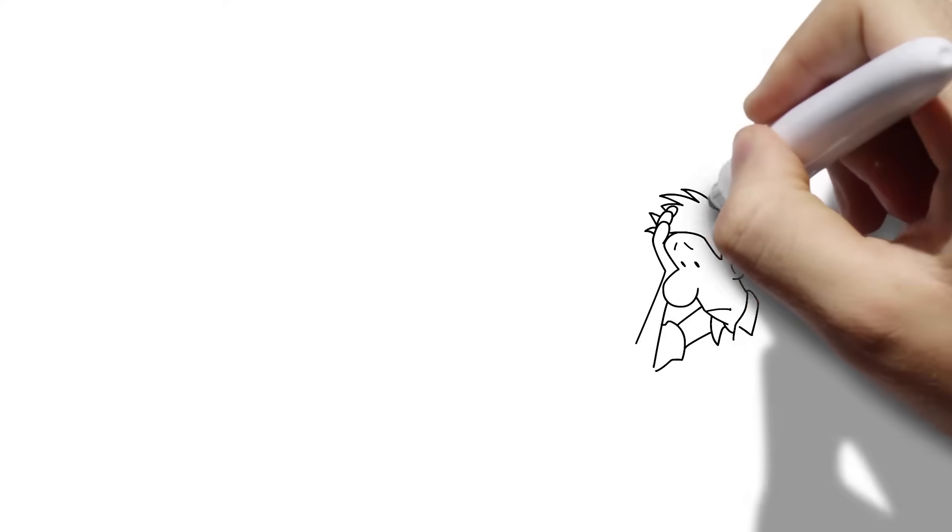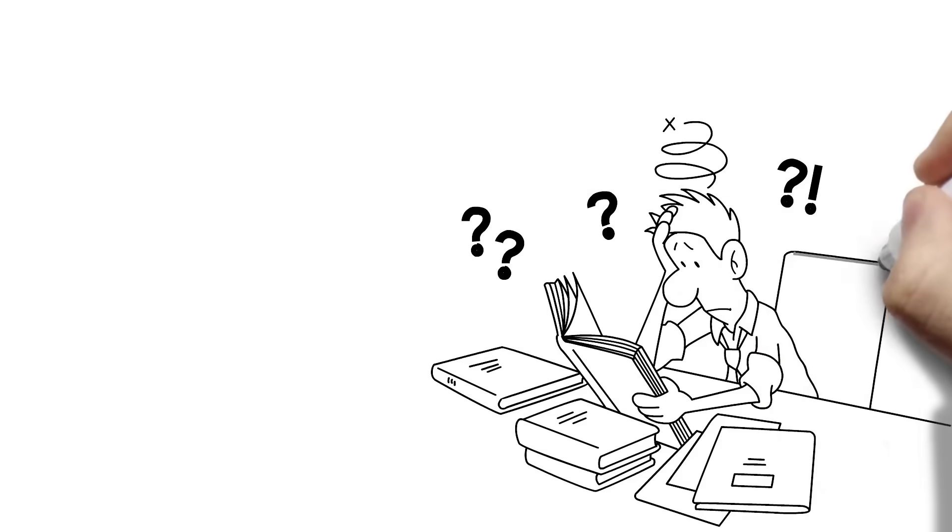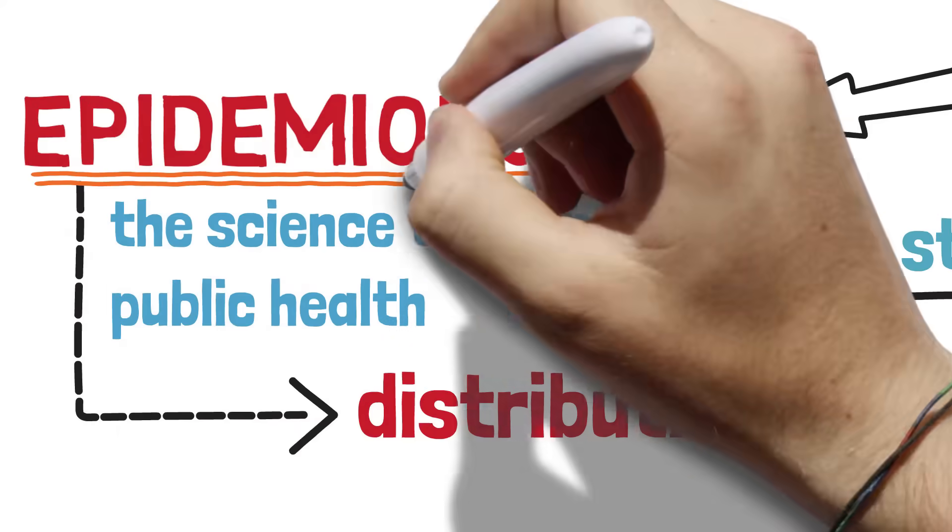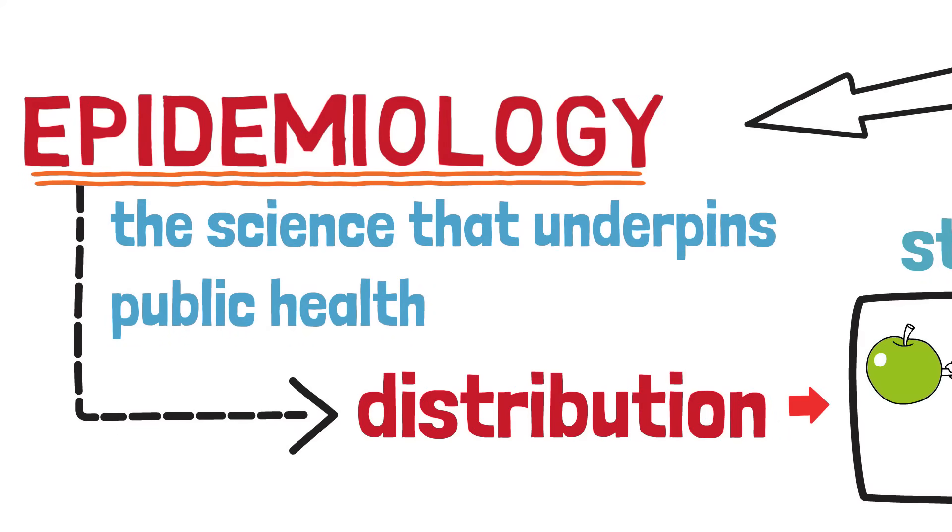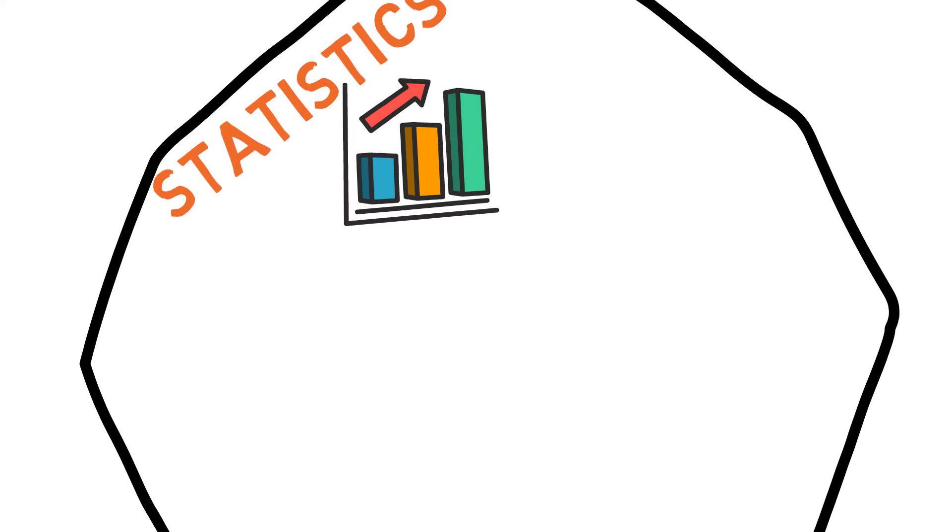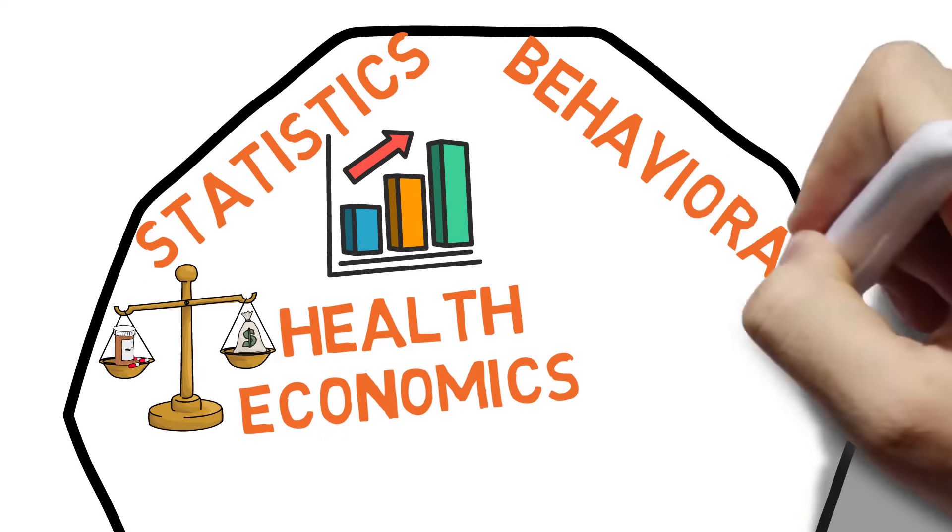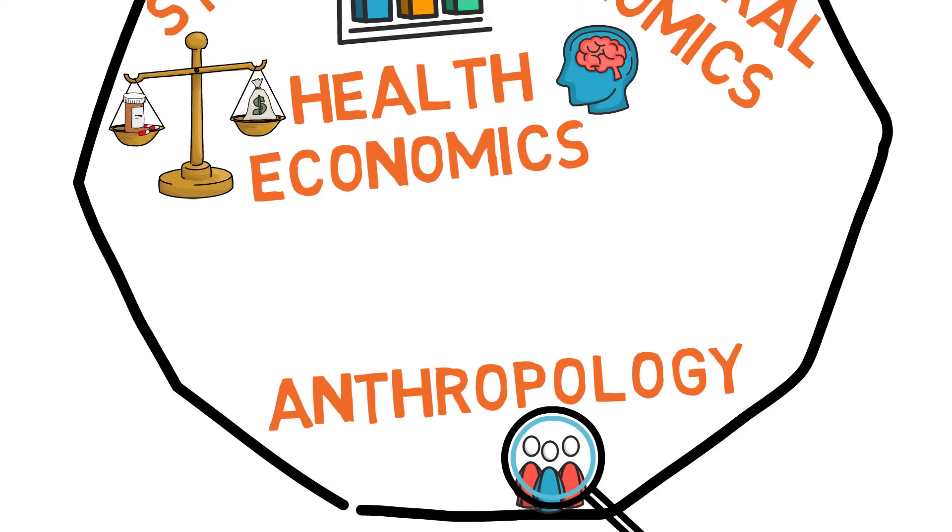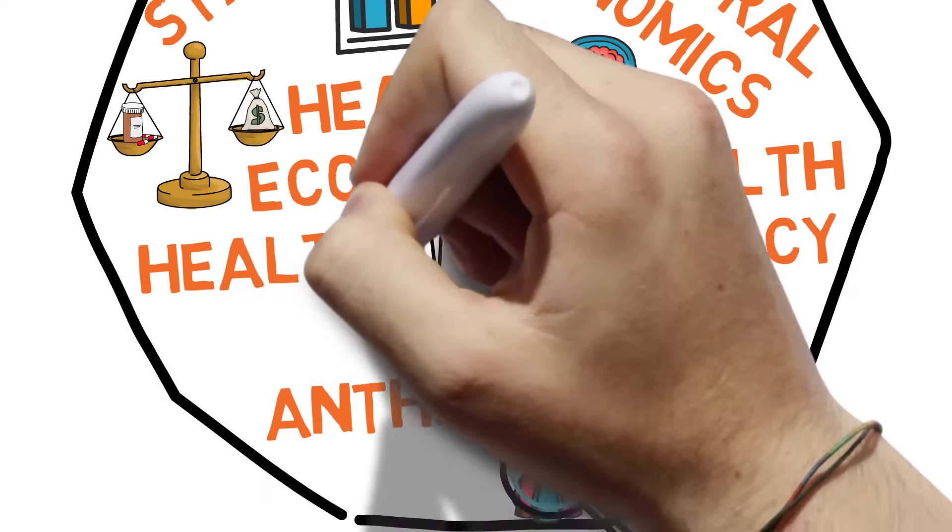In your career, you might get away with not really knowing a lot about statistics or health economics, but you will not get away with not understanding epidemiology. Other subjects you'll learn include statistics, health economics, behavioral economics, anthropology, health policy, health systems, and others. But these are the core ones that you're going to have to learn.